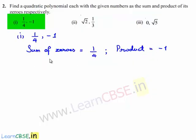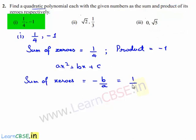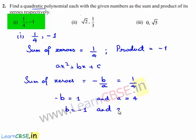Let us assume the quadratic polynomial as ax² + bx + c. We know that the sum of zeros is equal to -b/a, and the given sum of the zeros is equal to 1/4. So we can say that -b = 1 and a = 4, that is b = -1 and a = 4.